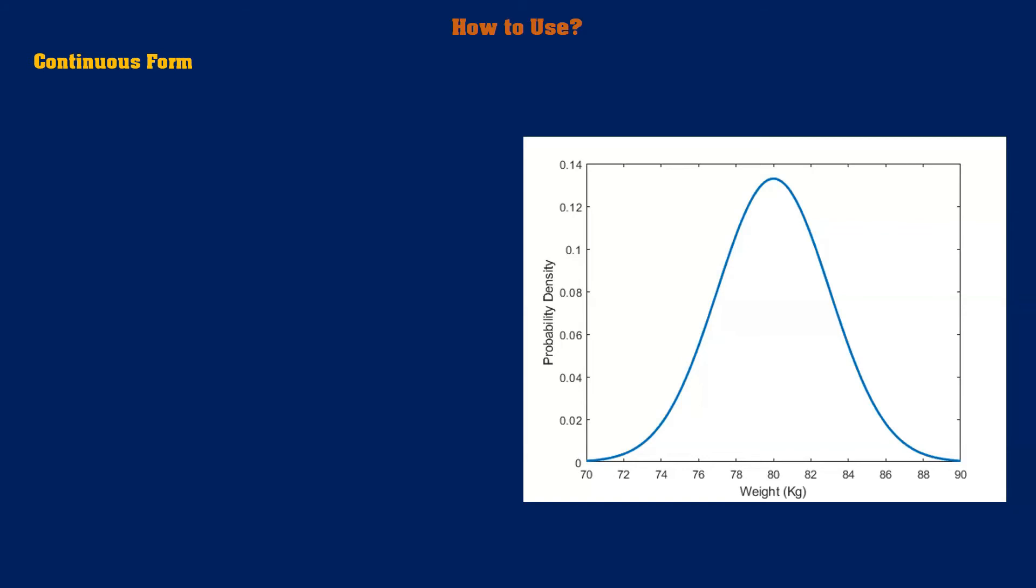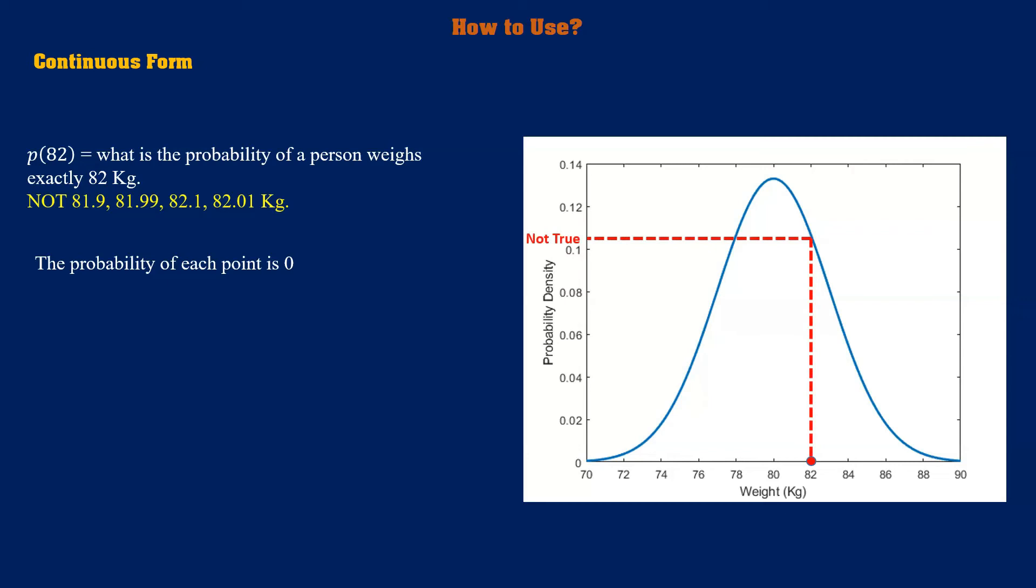Now we want to know how much is it probable to face a person who is exactly 82 kilogram, not 81.9, not 81.99, not 82.1 and not 82.001. If you think about this, it seems impossible to find a person who is exactly 82 kilogram without a gram more or less. This is the reason that the probability of each point in the continuous form is zero and you cannot simply find the point and look at its value on the figure.